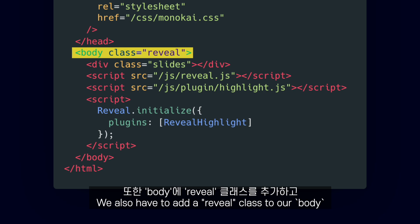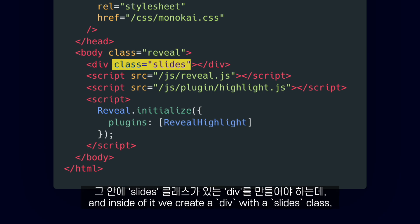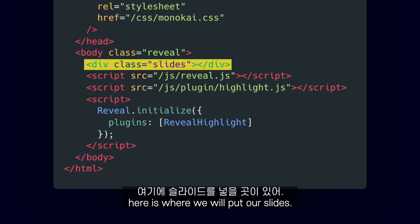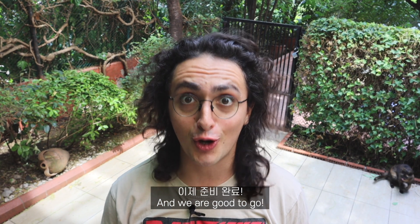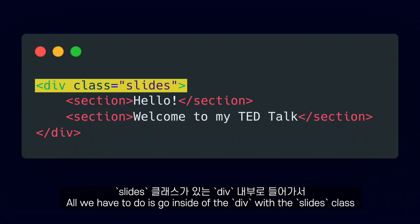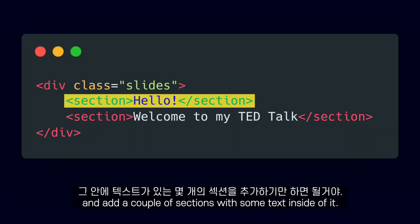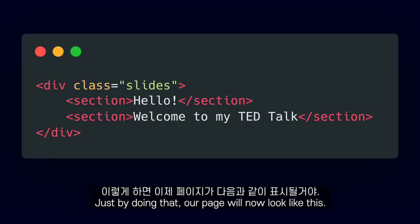We also have to add a Reveal class to our body, and inside of it we create a div with a Slides class. Here is where we will put our slides. And we're good to go. Creating slides is super easy. All we have to do is go inside of the div with the Slides class and add a couple of sections with some text inside of it.